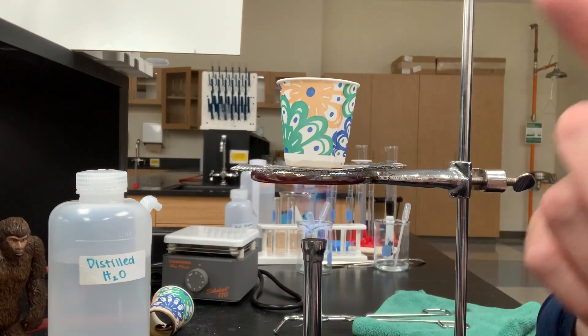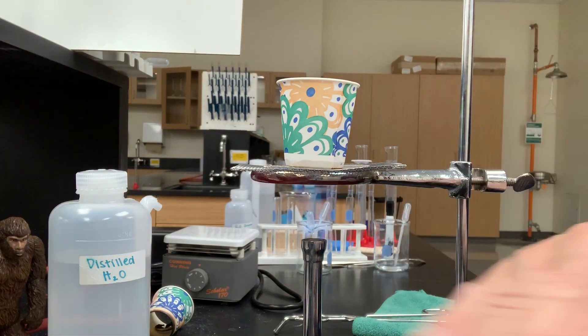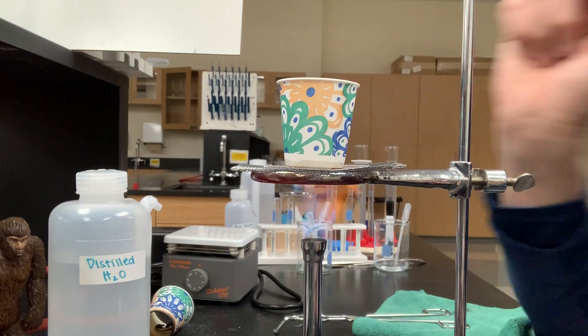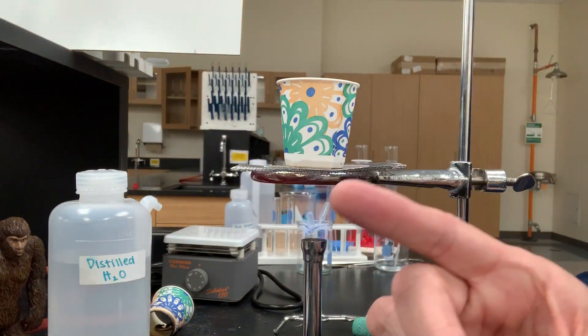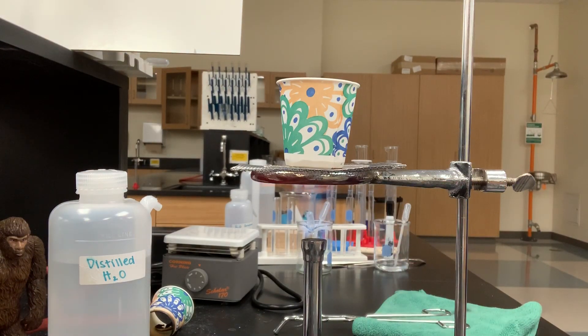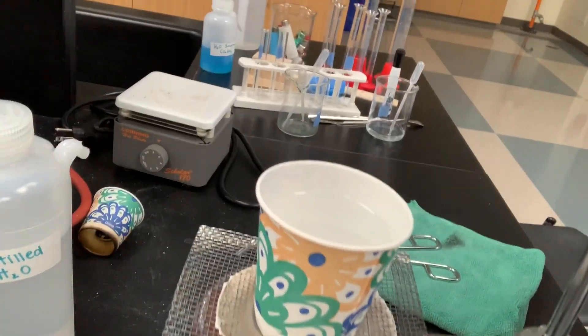So the temperature, once you reach the boiling point of water, will stay constant until all of that liquid has boiled. That means that the paper will not reach a temperature that's higher than the boiling point of water, which is below the flash point of paper. So let's take a look. Let's see if my water is boiling yet. Looks like it's just starting here.